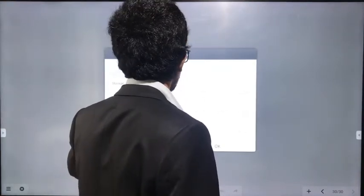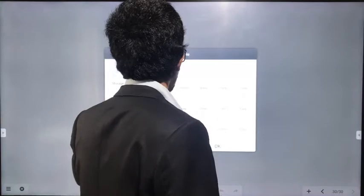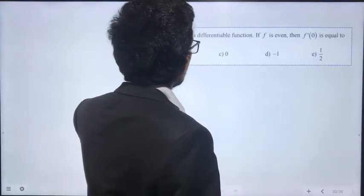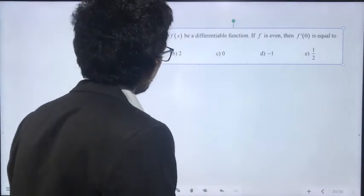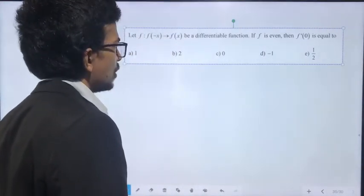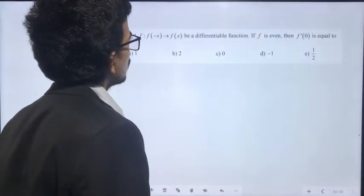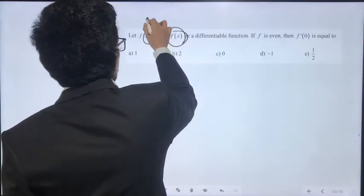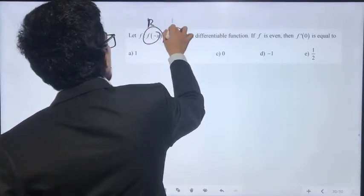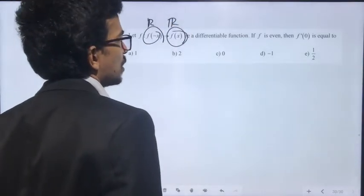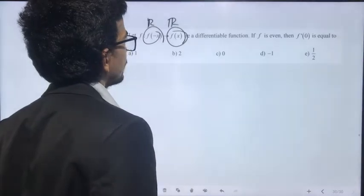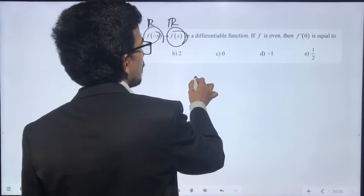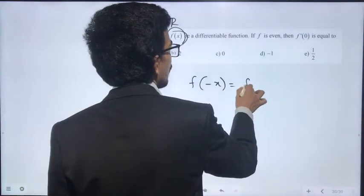Question 70: f defined from ℝ to ℝ is a differentiable function. If f is even, then f'(0) equals what? f is even means f(-x) = f(x).